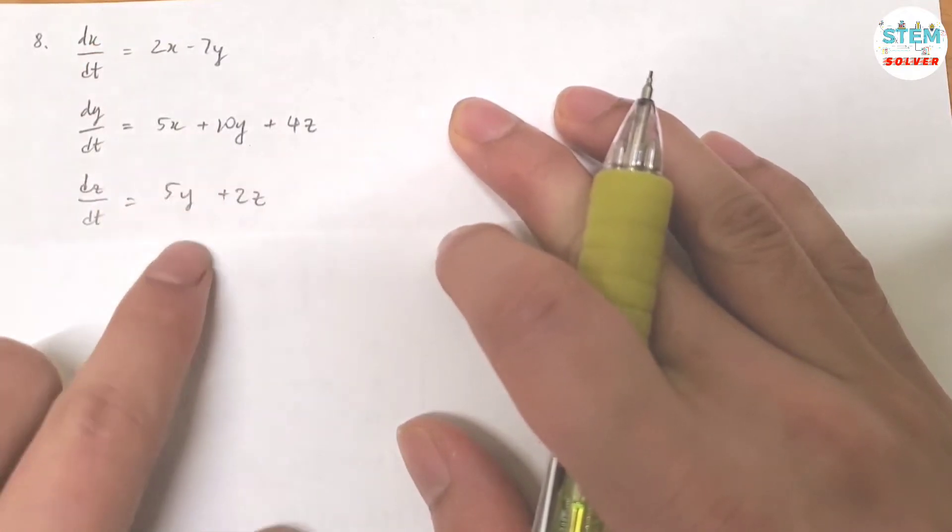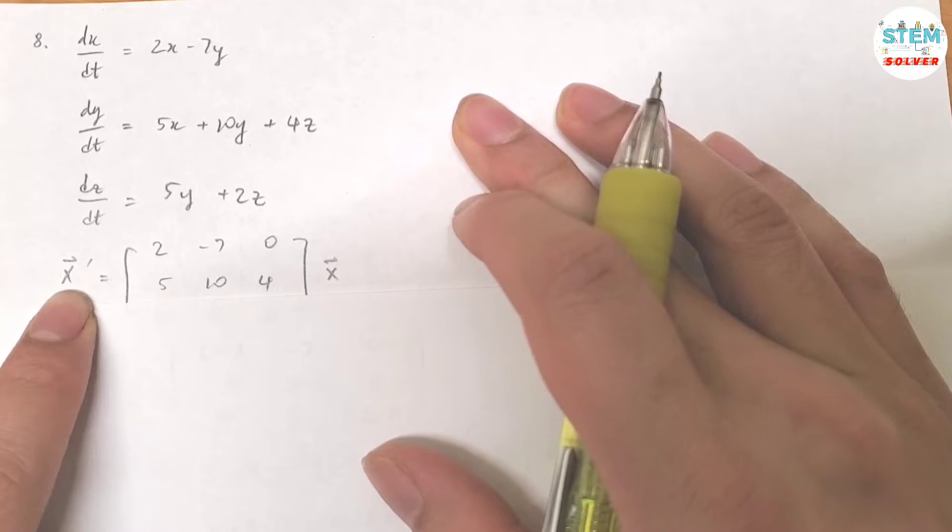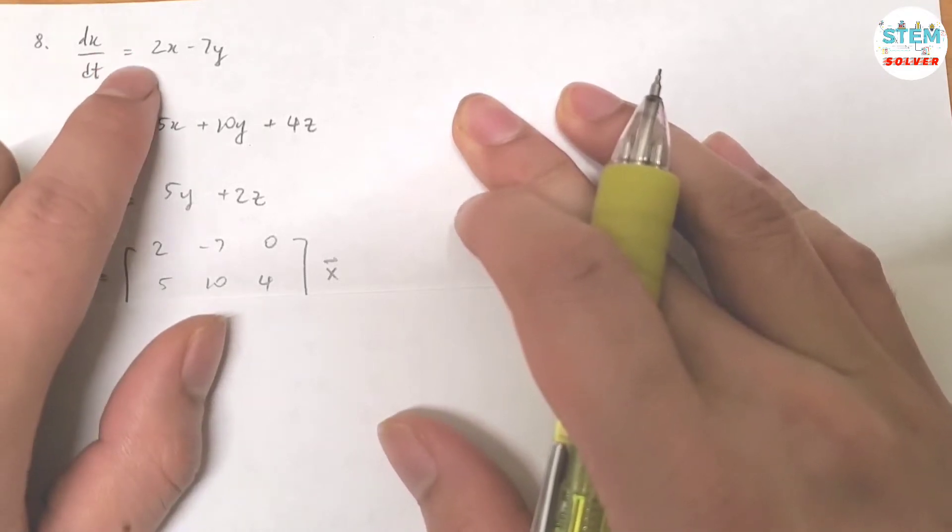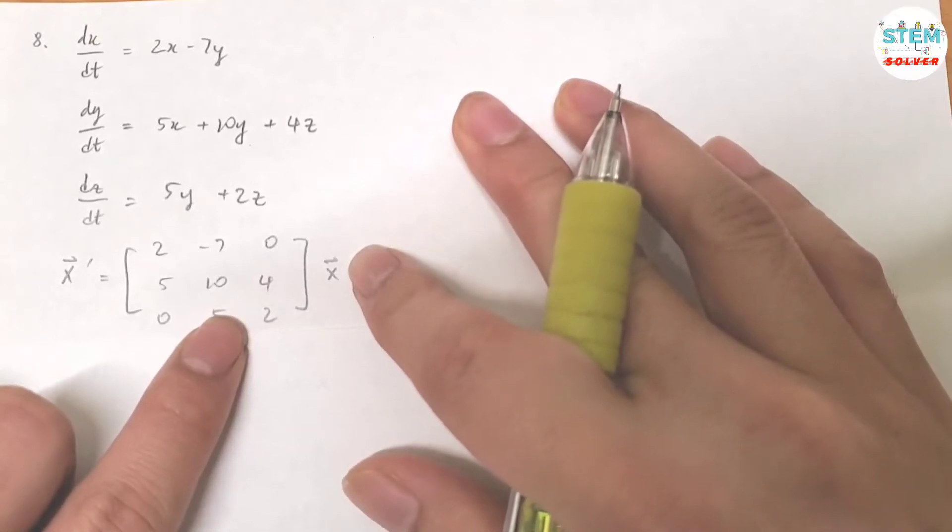First you need to rewrite this in form of a vector x-prime. So basically you just take the leading coefficients of x, y, z and put it down into a matrix, then multiply it with vector x.